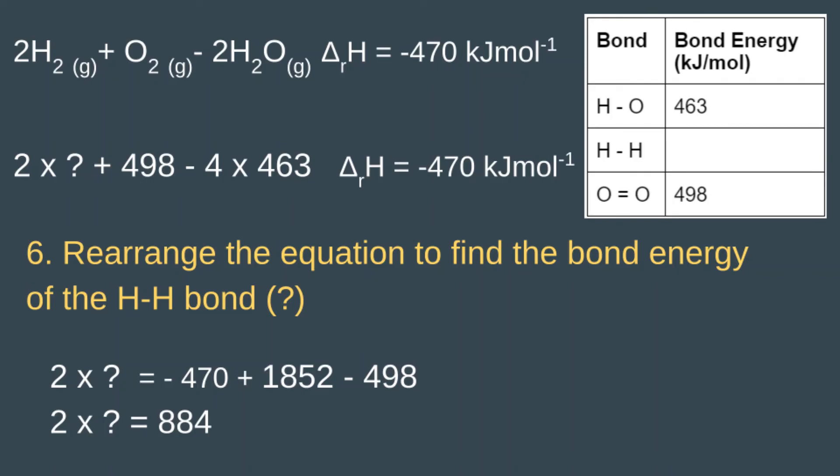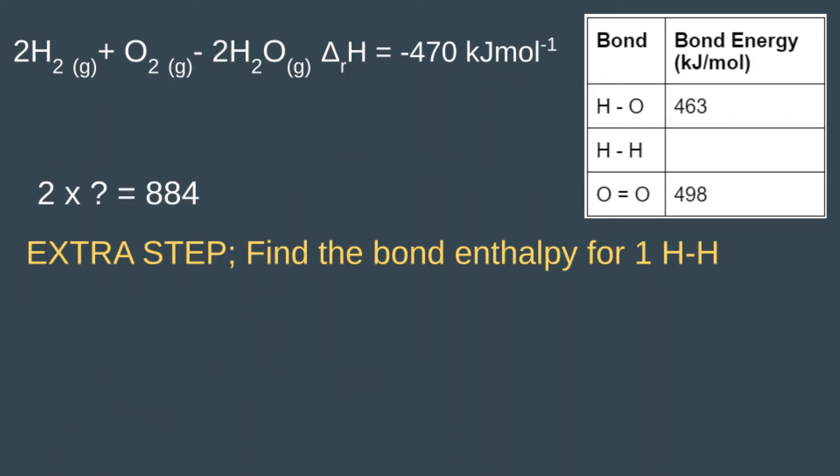...and we have minus 498 from the right-hand side as well. So two times question mark equals negative 470 plus 1852 minus 498. If we add the right-hand side together, that comes to a total of 884. So what we know is that two times the H-H bond gives us 884 kilojoules.